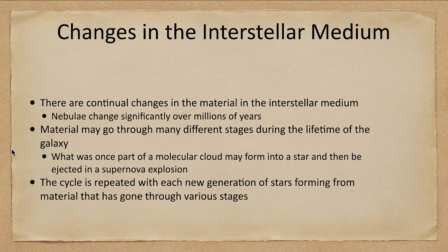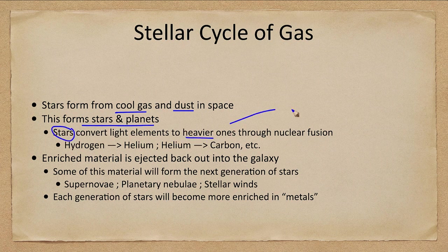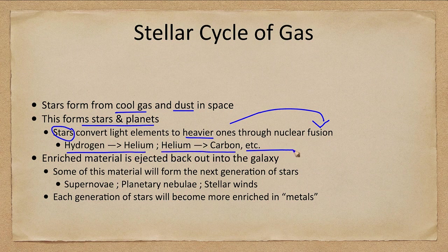Let's look at the cycle of gas. Stars form from cool gas and dust in space, which forms stars and planets. Those stars convert light elements into heavier ones through nuclear fusion, as we discussed for our sun — hydrogen into helium, then helium into carbon, and so on depending on the mass of the star. This enriched material is then ejected back out into the galaxy.